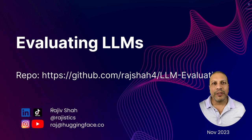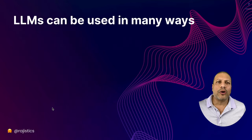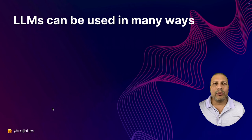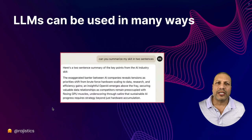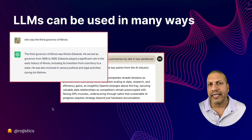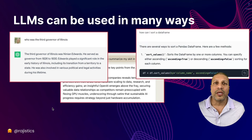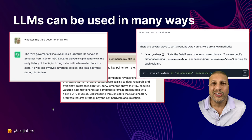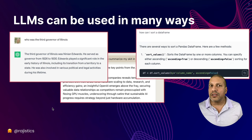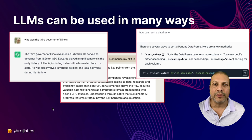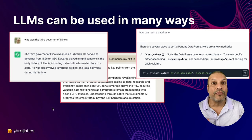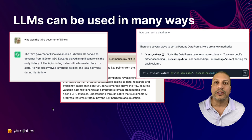Let's talk about where we are with these models. With large language models we can do summarization, question answering, code analysis, and so many other things. This is what makes it much harder to evaluate these models — it's not like the old days where we just had a simple confusion matrix.